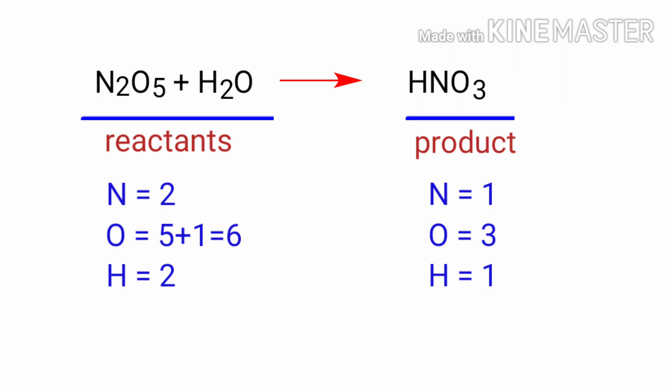In this equation the number of atoms at the reactants side are double the number of atoms at the products side. So to balance this equation we need to put a coefficient of 2 in front of the product.